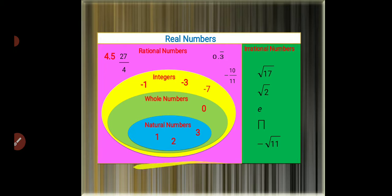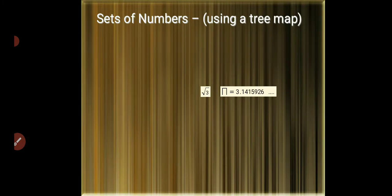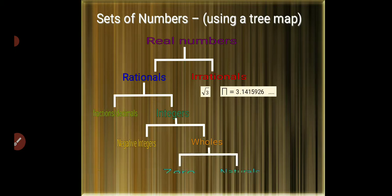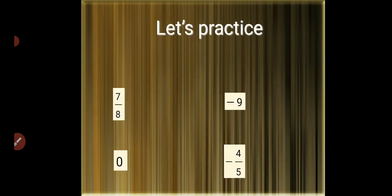Sets of numbers using a tree map: Real numbers contain rationals and irrationals. Rationals include fractions, decimals, and integers. Integers contain negative integers and wholes. Wholes contain zero and naturals. Let's practice.